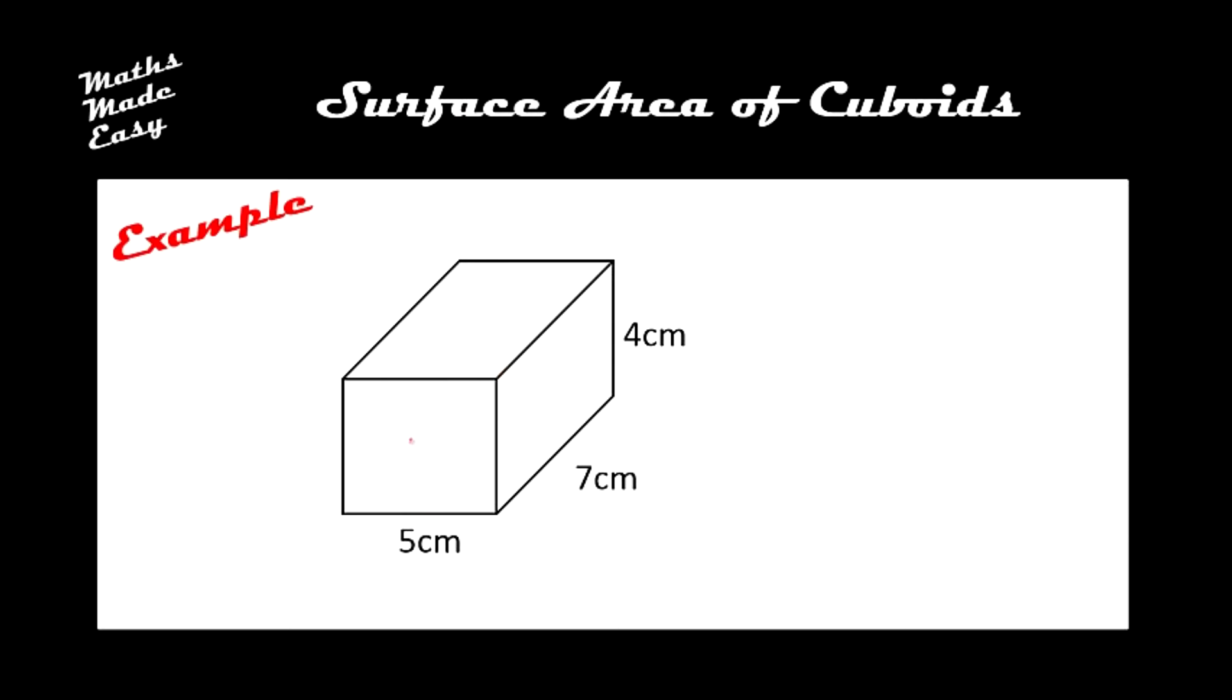So we know a cuboid has 6 of them. We've got this one here on the front, we've got this second face on the top, this third face here on the right. But of course there are 3 faces that we can't see from this picture. There's one round the back there, which we know is the same as number 1, just in a different place.